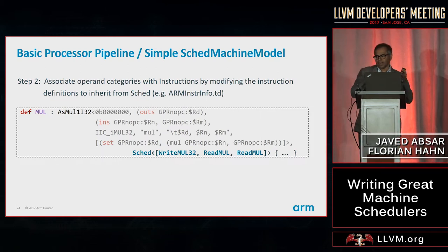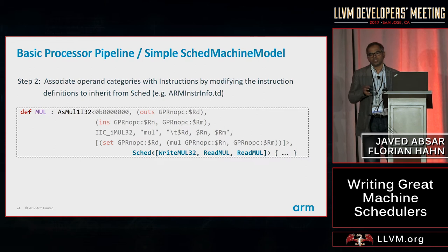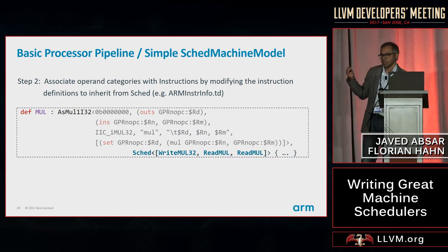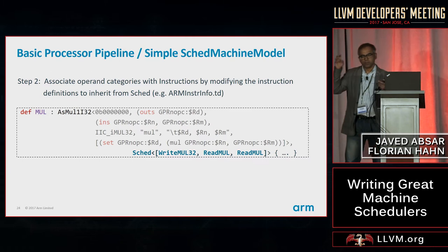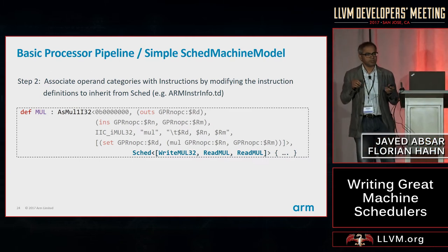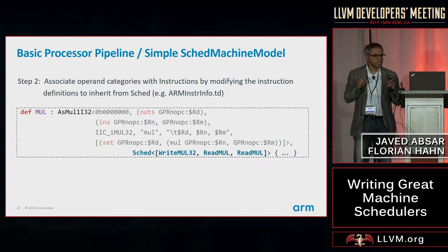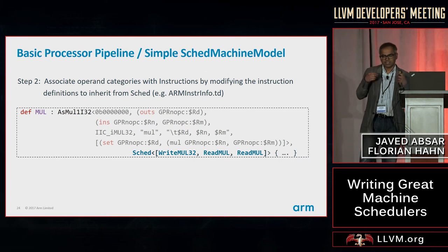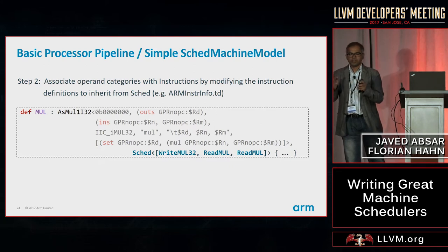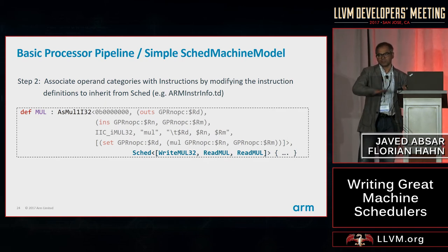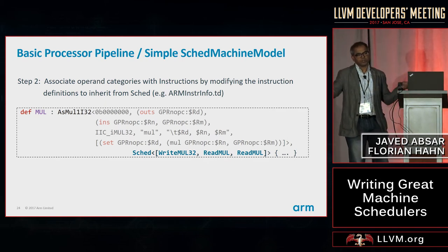Once you have the schedule categories, you attach them to actual instructions. In this example for multiply, you define a SchedRW list that says a multiplication reads two inputs and produces one output. At a very top level, you say this instruction — already defined in arm-instruction-info.td — has a Sched attribute defining the schedule for input and output operands. This is not talking about a specific processor at this point; it's talking about the whole target. The next step is where you delve into the actual processor.